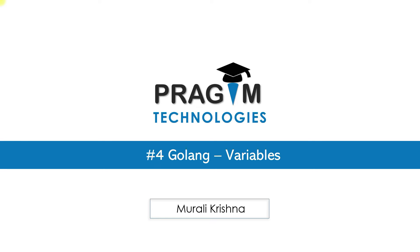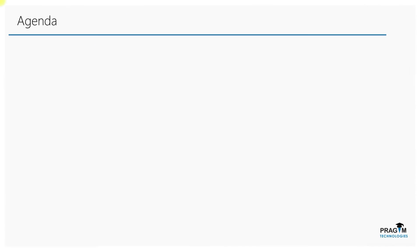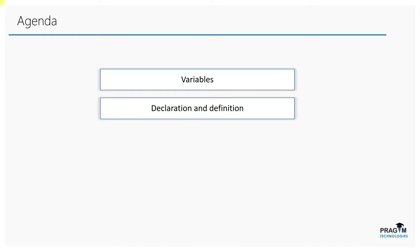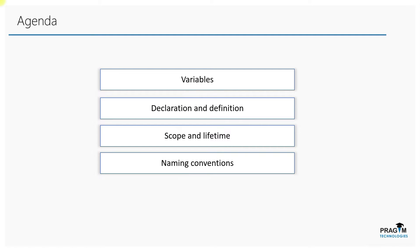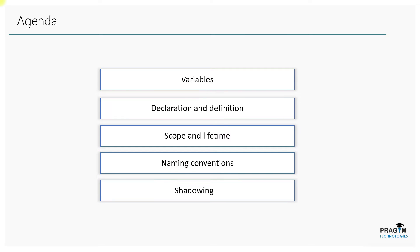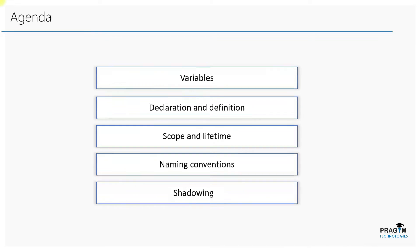Hello, welcome to part 4 of the Golang series. Today in this session we'll discuss what variables are and how to declare and define variables in Golang. Following that we'll understand the scope and lifetime of variables, then move into naming conventions and how variables get shadowed in Golang. Before we understand what variables are, let's have a look at the following example program.